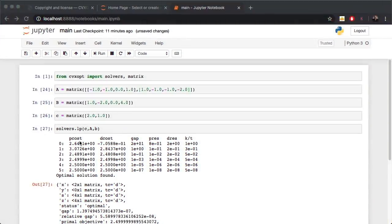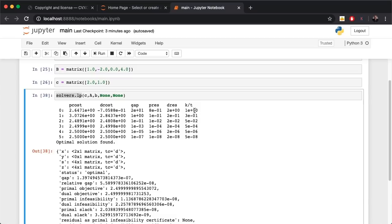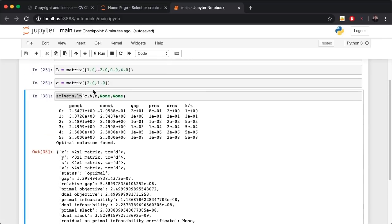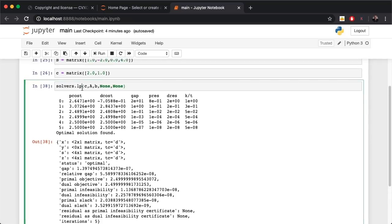How could we read this? Since we're minimizing the cost function, you could actually see that the cost is brought down at each iteration of the LP solver. Since we see those iterations with this k over t parameter, I think this algorithm solvers.lp uses interior point methods.